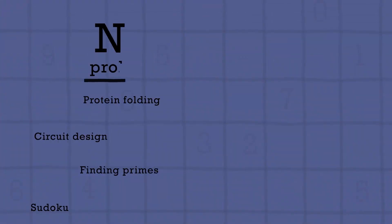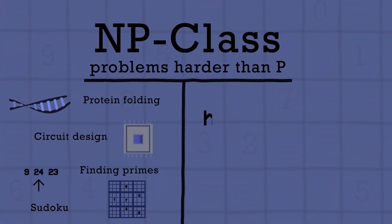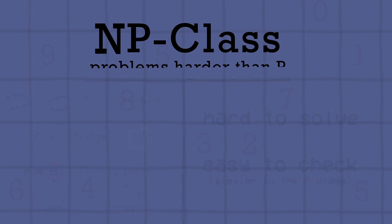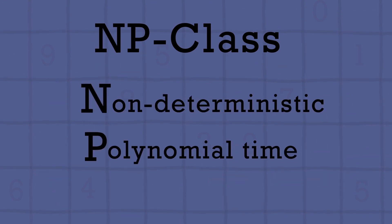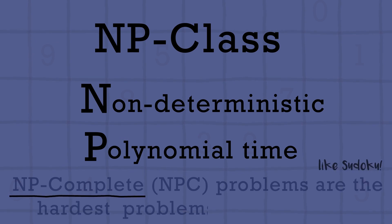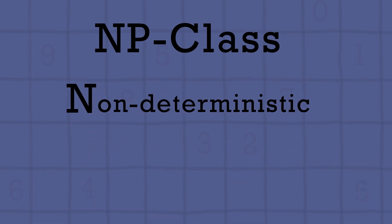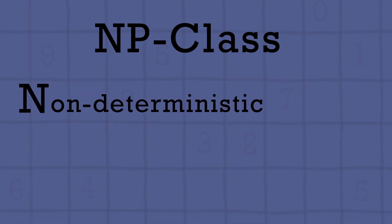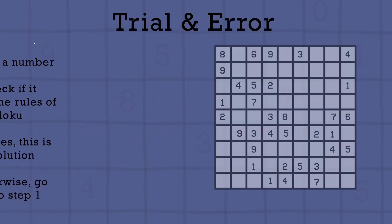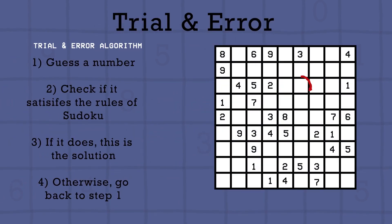Some harder problems are in NP. They're hard to solve, but their answers are easily checked. NP stands for non-deterministic polynomial time. NP complete, or NPC problems, are the hardest problems in this class. Non-determinism just means you can't find an answer without trial and error. Like in the Sudoku grid — what's the number here? You need to try many before knowing the answer.